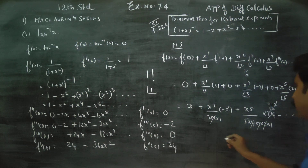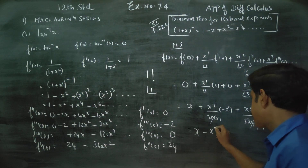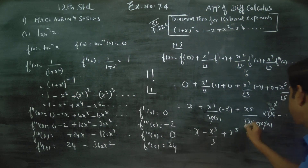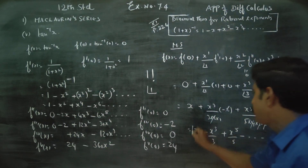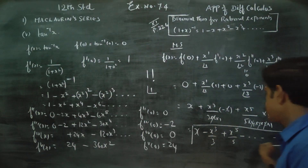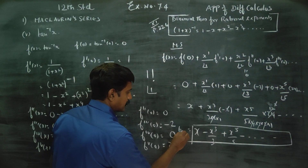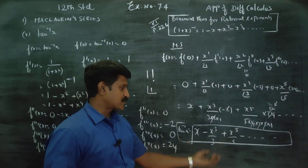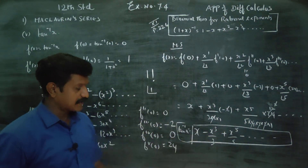After cancelling everything, the final answer will be: x minus x cube by 3, plus x power 5 by 5, minus dot dot dot, going on like this. This is your tan inverse x formula: x minus x cubed by 3 plus x to the power 5 by 5, and so on.